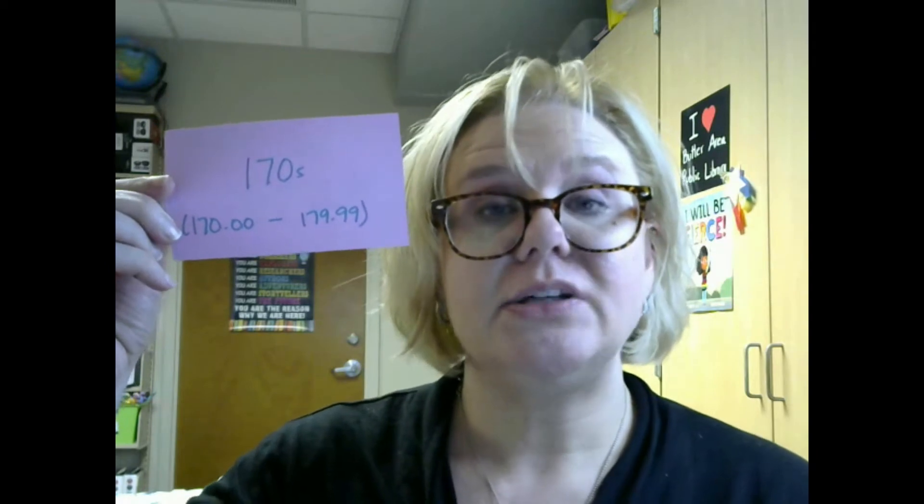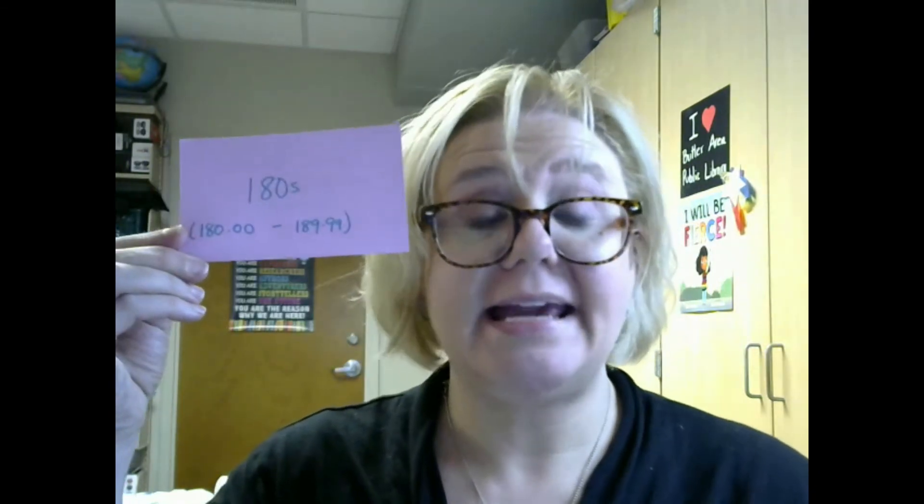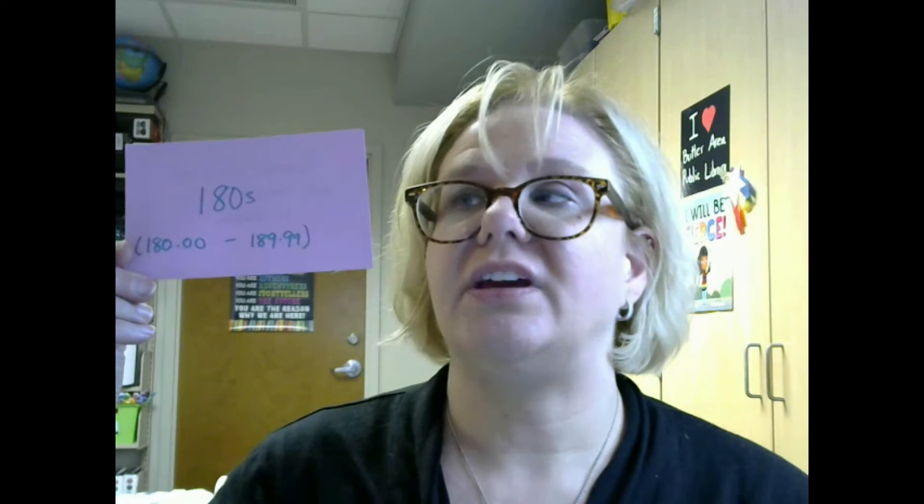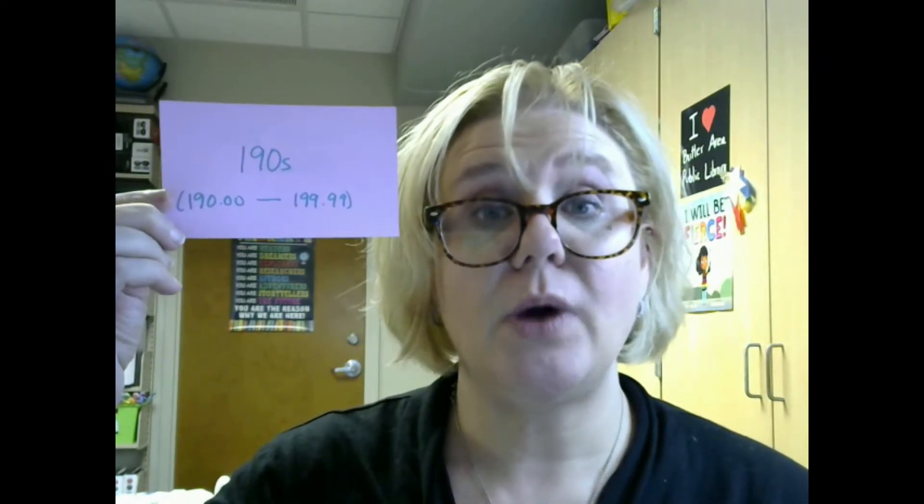The next is the 170s, that's 170.00 to 179.99, and this is where we find the study of ethics — what is right and what is wrong. Legal ethics, moral ethics — you're going to find topics like that here. Next we have the 180s, 180.00 to 189.99, and this category is reserved for ancient, medieval, and eastern philosophies. Finally, we have the 190s, 190.00 to 199.99, and this is where you find modern western philosophy.